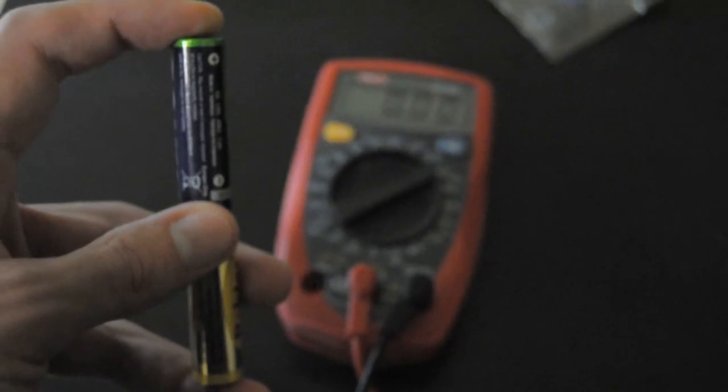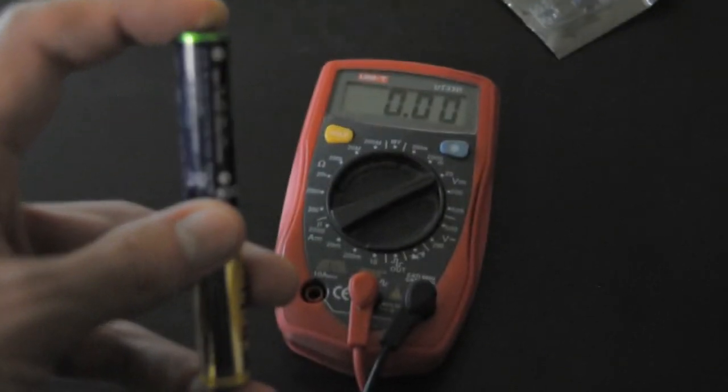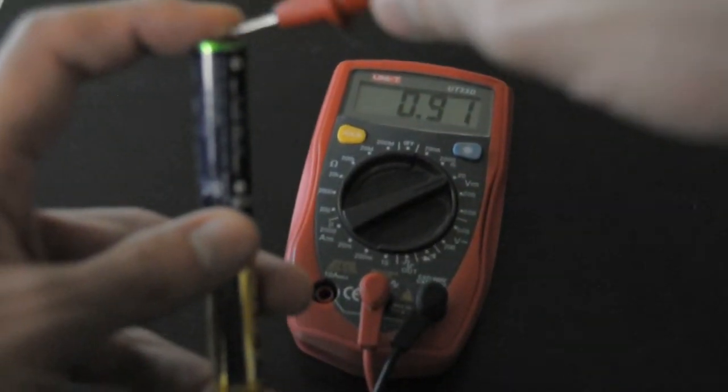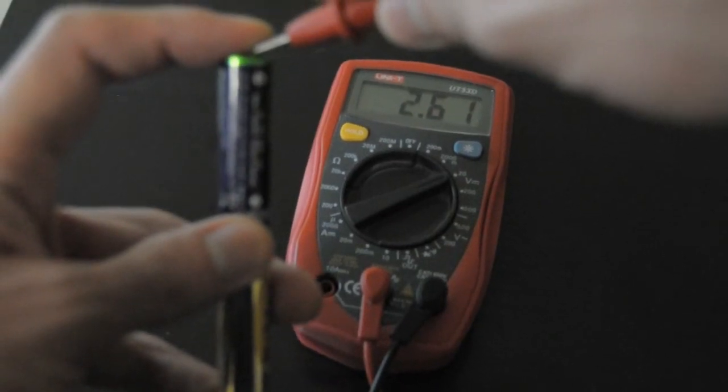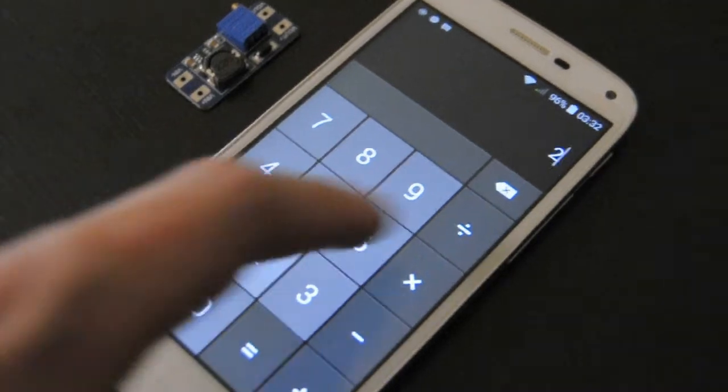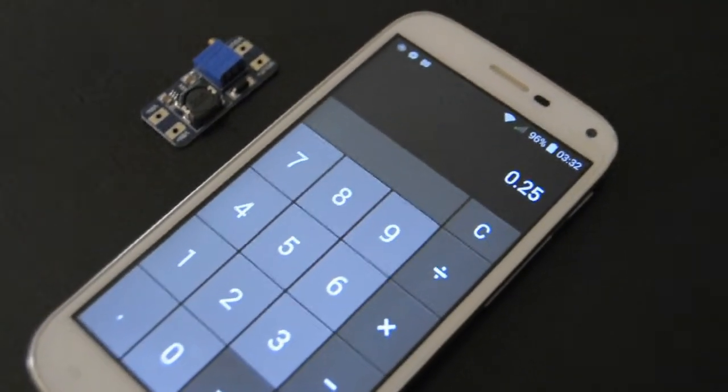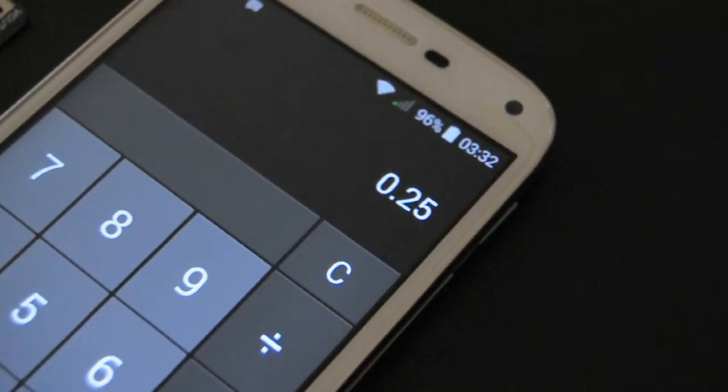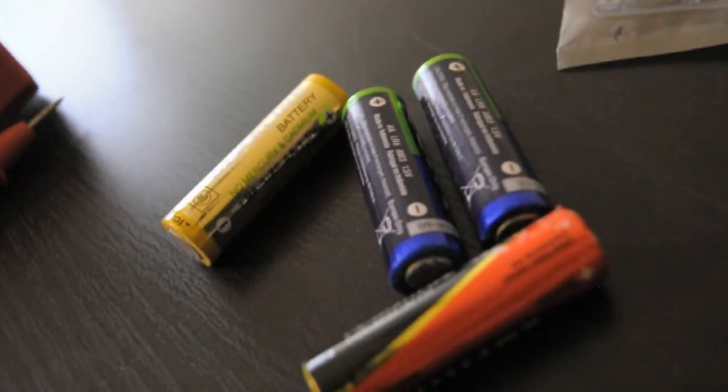For this to work you need at least 2 cells to make up for the 2V required minimum input. The amount of cells determines the minimum voltage each one needs to have. For example if I divide 2V by 8 cells it tells us that each of the 8 can work down to 0.25V.